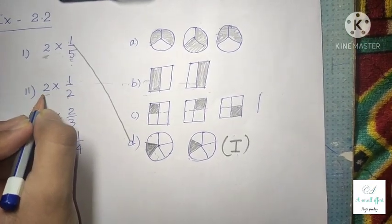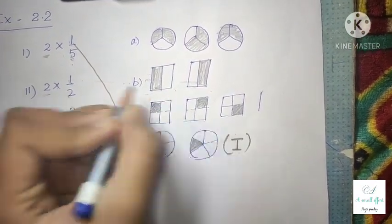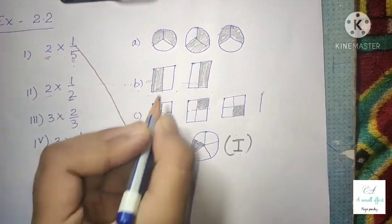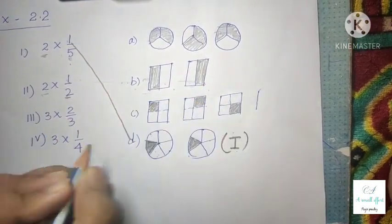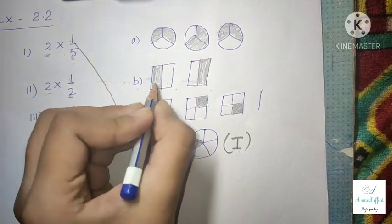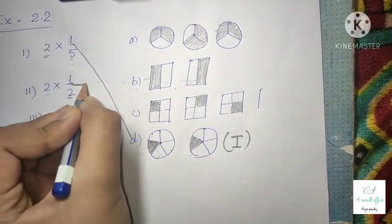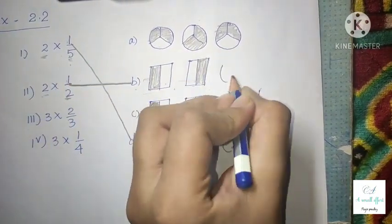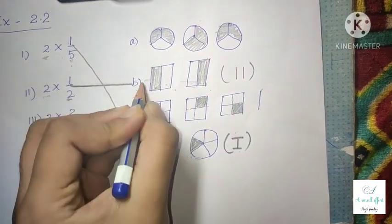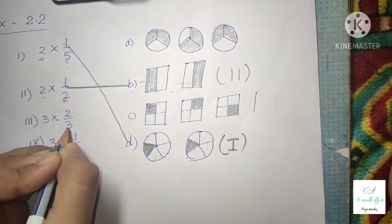Option 2 is 2 × 1/2. This means the option should have 2 objects — option B has 2 objects. The denominator is 2, meaning 2 equal parts should be there, and the numerator is 1, meaning 1 part should be shaded. So option 2 is matched with option B.